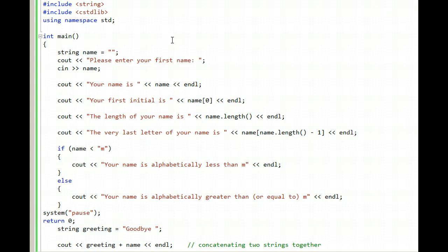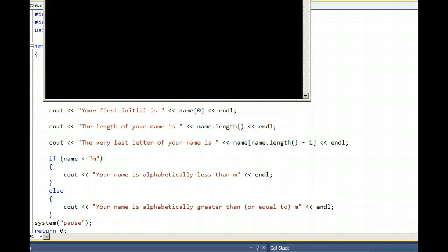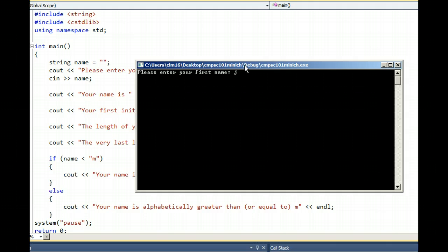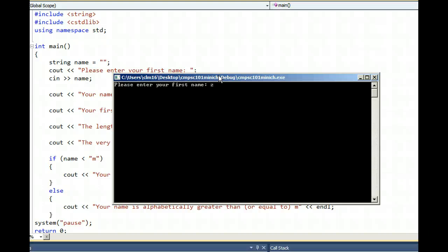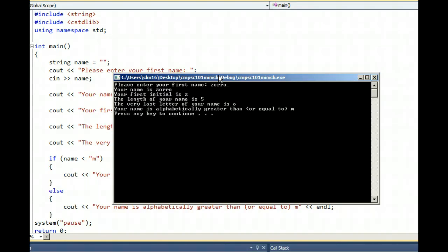Let's test the program with John and Zorro. John is alphabetically less than M. Run the program again with Zorro, and Zorro is alphabetically greater than M.